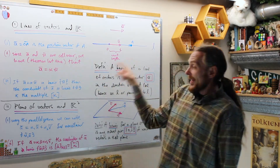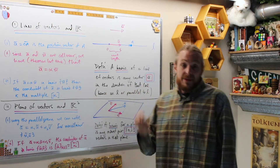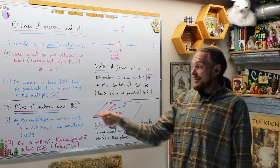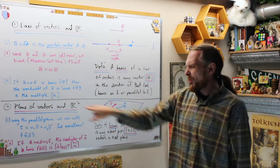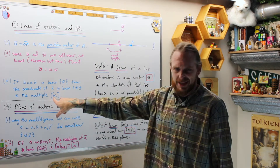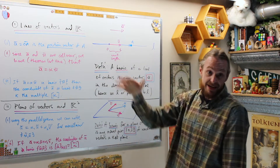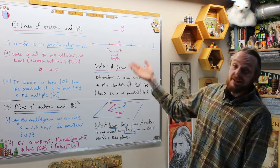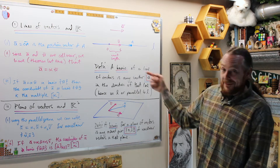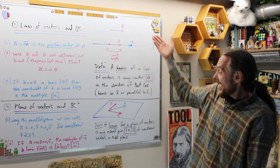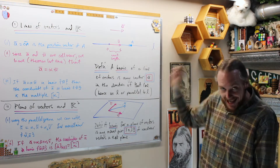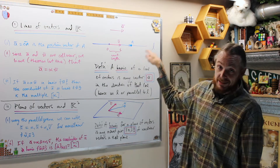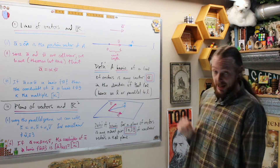If any other vector is a multiple alpha of this basis vector U, then the coordinate of A in that basis is the multiple alpha. When we get to two dimensions and three dimensions, we're going to have many coordinates depending on the dimension we're in. The definition of a basis for a line is any vector which is in the direction of that line — either on the line itself or collinear to it on a parallel line.